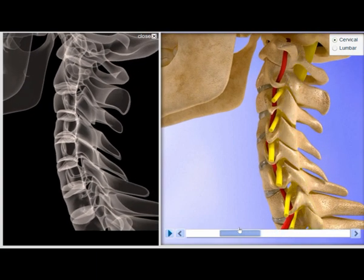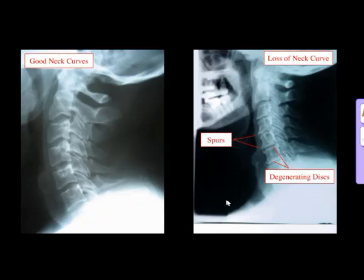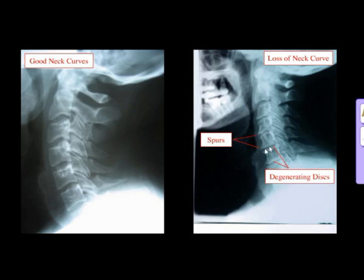We want to try to bring the curve back. A healthy curve in the neck shows a good C-shape, with bones that are squared like ice cubes and visible disc spaces in black. On the right you can see very sharp bone spurs and very thin disc spaces. If you are not familiar with bone spurs, slip discs, and narrowing of disc spaces, please feel free to watch my other videos on our MyCare YouTube channel where I talk more in depth about this problem.